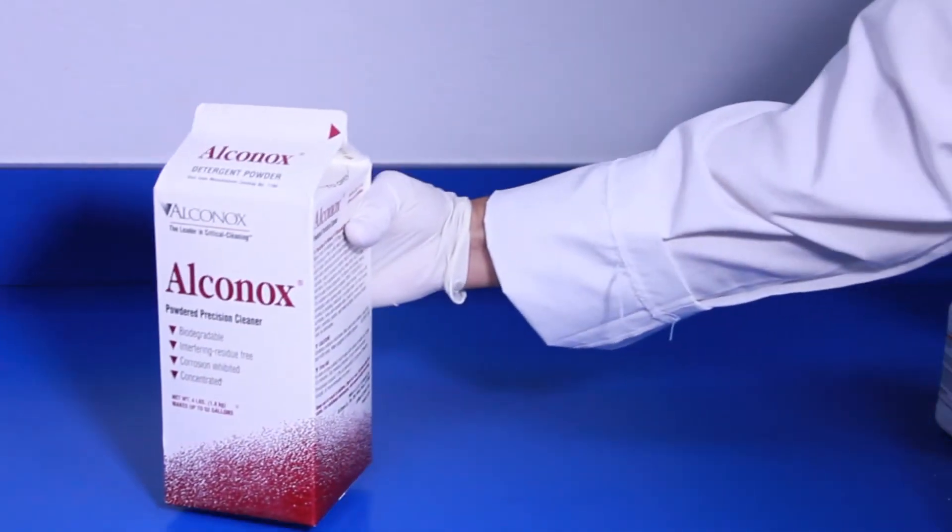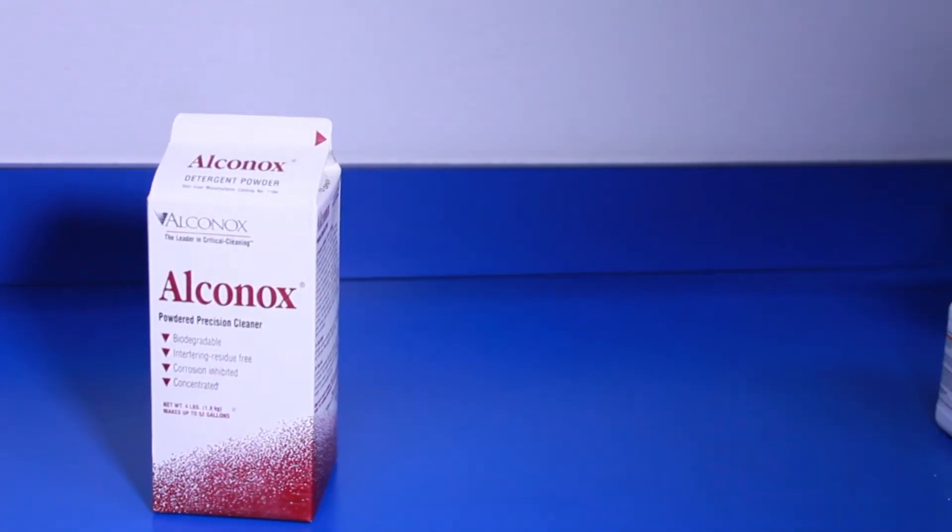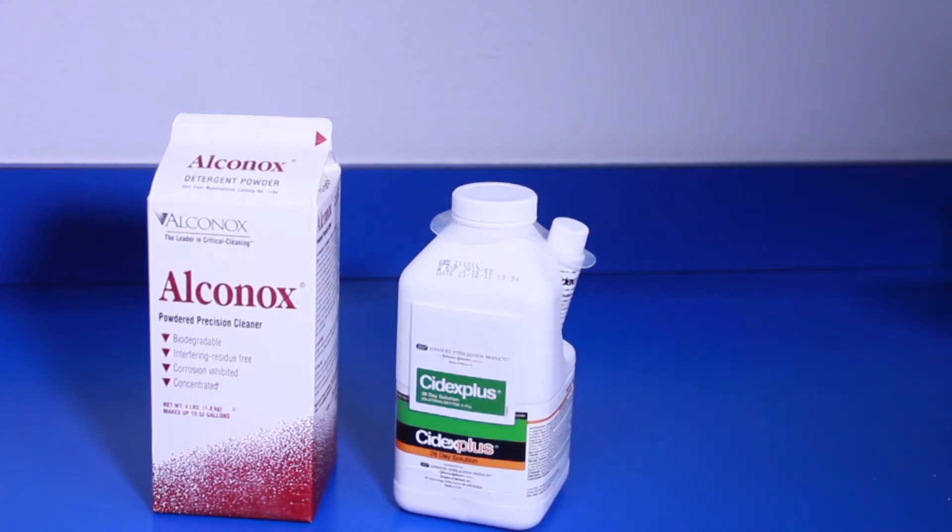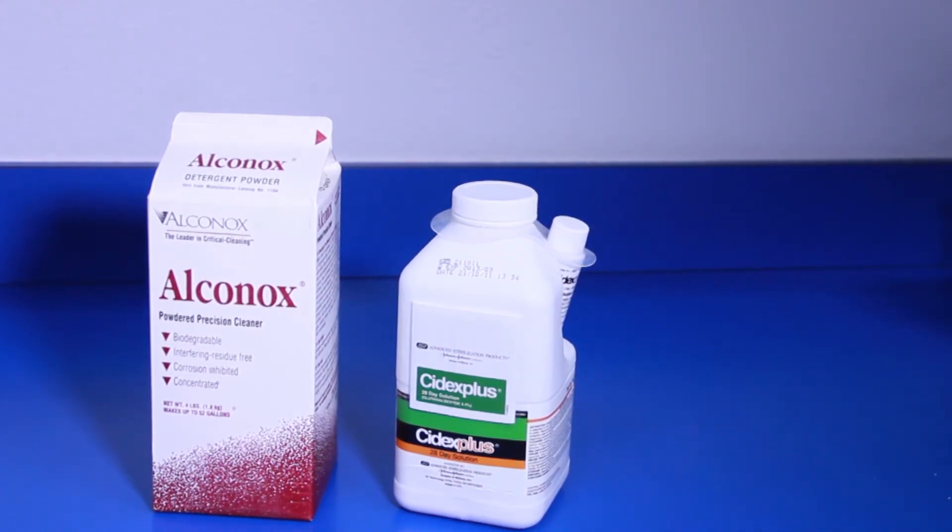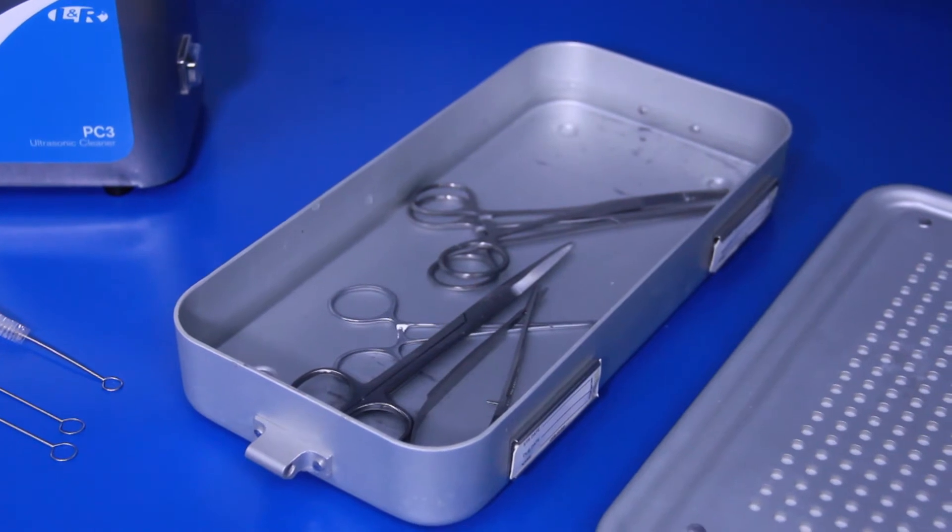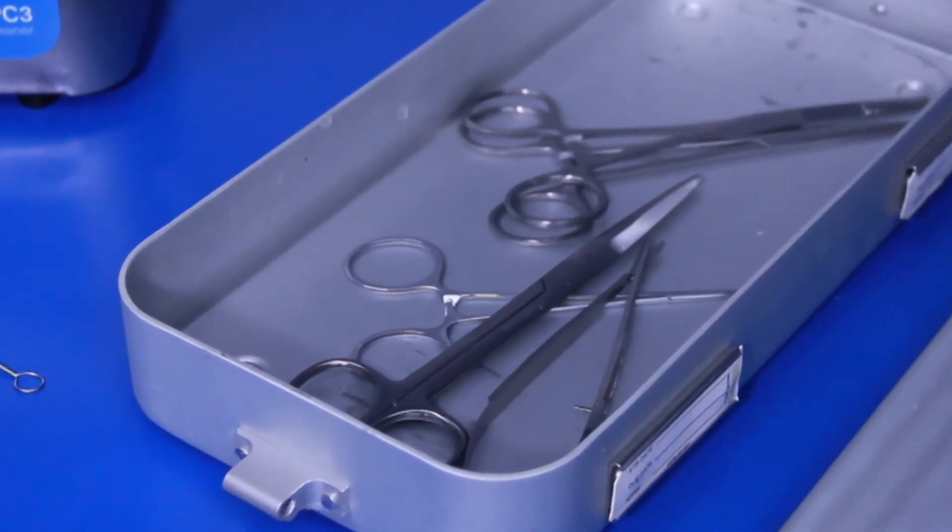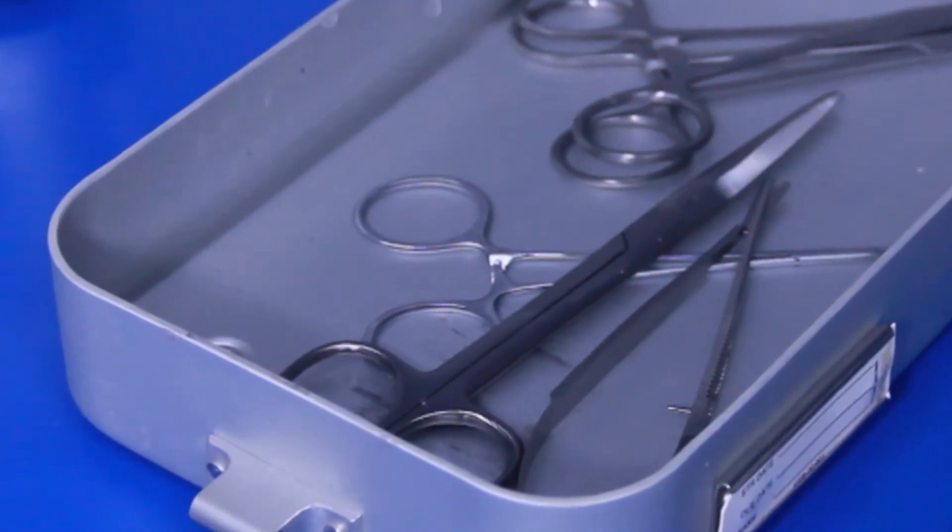Use only neutral pH detergents. If the instruments are not rinsed properly, low pH detergents may break down the stainless protective surface and cause black staining. High pH detergents may cause surface deposits of brown stains, which can interfere with the smooth operation of the instrument.